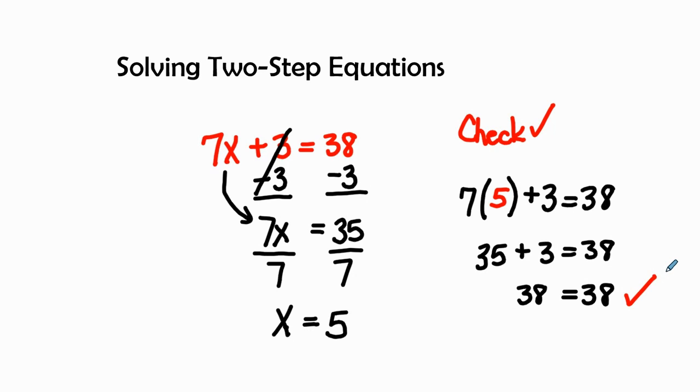Just as a reminder, when solving two-step equations, we manipulate the equation to get x by itself, find our solution—in this case x equals 5—and then check our work. Once both sides equal each other, our answer checks out and x equals 5 is the correct answer.